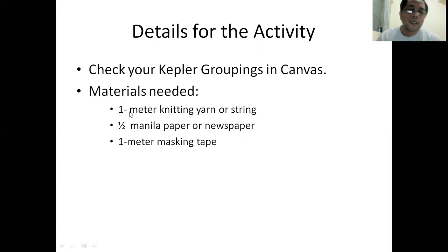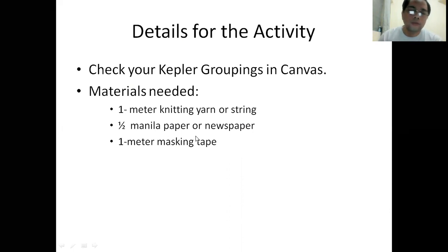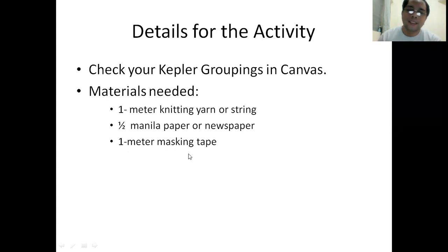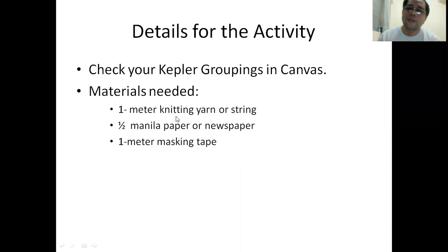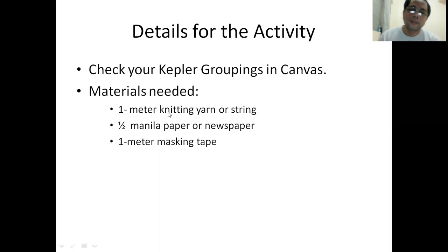Check your Kepler groupings in Canvas. The materials you will use are: one meter of knitting yarn, one-half manila paper or newspaper, and one meter of masking tape. Regarding the actual biological weapon object to be inserted into the device, I'll announce that in our next video or meeting. For today, use your whole period to work out a plan and meet your group to discuss how to address this challenge. I hope you got the idea — God bless and enjoy your meeting with your new Kepler grouping.